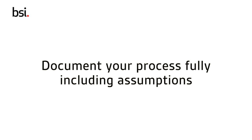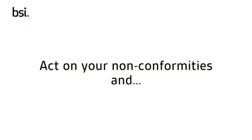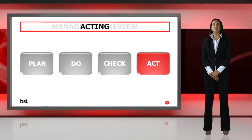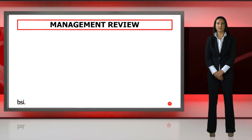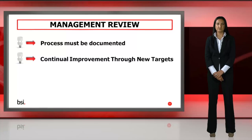So document the process fully, including any assumptions you may have made. The final part of the PDCA cycle is Act. This means acting on any non-conformity or deviations from the expected result. It also means undertaking a management review of the whole process. The management review need not only occur at the end of the process. Top management is expected to review and record the status of the energy management system to ensure it's working effectively and to provide any corrective measures. This might involve committing additional resources or training to get the energy management system back on track.